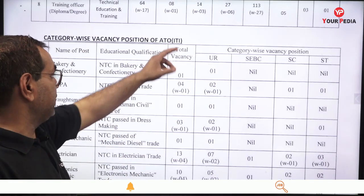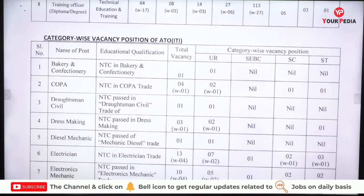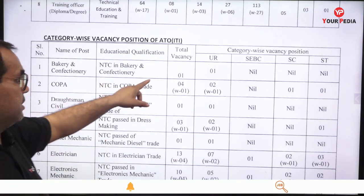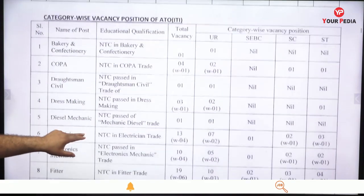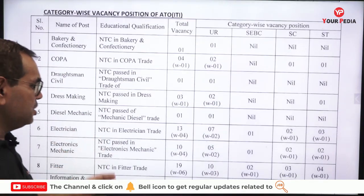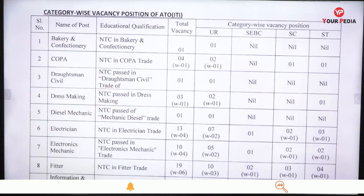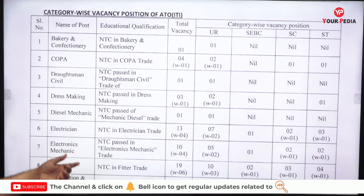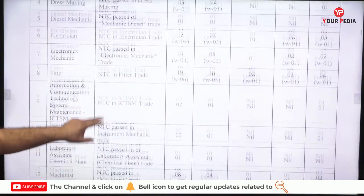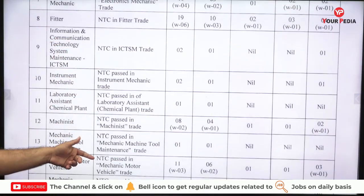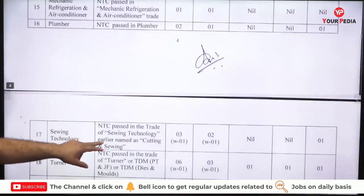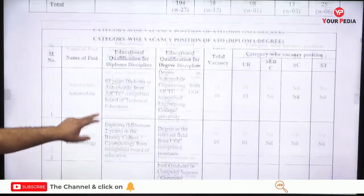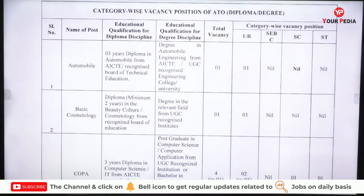For the ATO category-wise vacancy position for ITI, for example, Bakery and Confectionery — NTC in Bakery and Confectionery — there is one vacancy in the unreserved category. The other posts here are for students from non-engineering backgrounds such as draftsman, dressmaking, diesel mechanic — these are for ITI students. So ITI students can also apply here according to their respective branches.